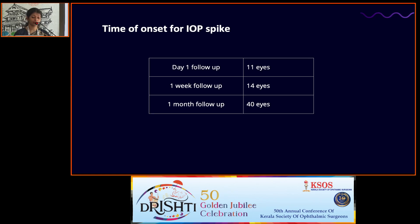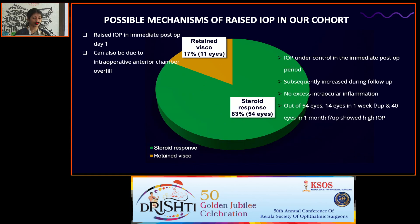The time of onset for IOP spike: 11 eyes had a spike at day 1 follow-up, 14 eyes at 1 week, and 40 eyes at 1 month. The possible mechanisms of raised IOP were: retained viscoelastic in 17% of eyes (11 eyes), presenting in the immediate post-op period and potentially due to intraoperative AC overfill. The other group — 54 eyes (83%) — had steroid response; IOP was controlled immediately post-op but subsequently increased during follow-up, with no excess intraocular inflammation noted.